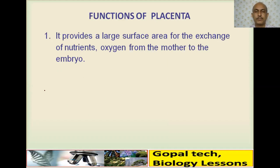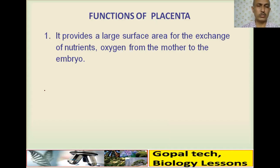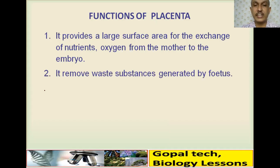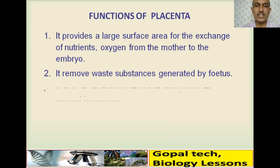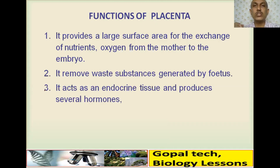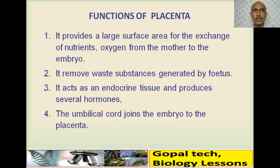The functions of the placenta include: providing a large surface area due to finger-like projections; helping in exchange of nutrients like sugars; supplying oxygen and removing carbon dioxide from mother to embryo; removing waste generated by the fetus; performing nutritive, gaseous exchange, and excretory functions. It also acts as an endocrine tissue and secretes certain hormones. The umbilical cord joins the embryo to the placenta.